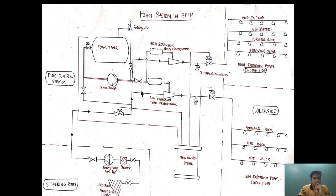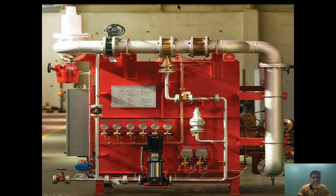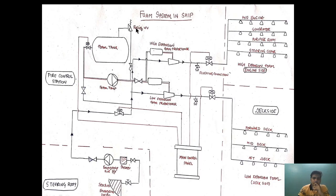A flushing connection is provided so that after the application the line can be flushed back. As you can see, a valve is provided here; when the application is over, the line can be cleared using sea water. A flushing connection is also provided so that the line going to different sections can be checked from time to time — air can be connected and blown through to verify that each nozzle point is clear. This applies to the deck side area as well. You can also see the foam pump, the main control panel, and a relief valve provided in this diagram.